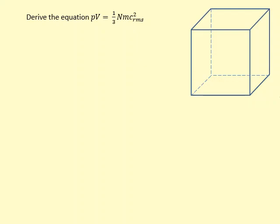This is called the kinetic theory of gas equation. The first step is to draw a cube and label it lx, ly, and lz — those are the lengths. Then draw a particle on the left-hand side going in the x-direction with a speed of ux.